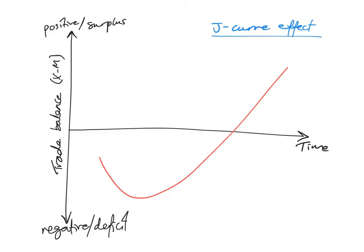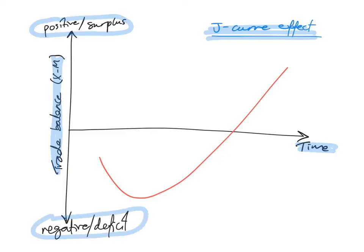Diagrammatically, the J-curve effect plots the trade balance — the difference between exports and imports — against time. On the vertical axis, a positive value indicates a surplus and a negative value indicates a deficit. As you can see, the current account deficit will actually get worse initially following a devaluation or depreciation, before it starts to improve. This is the J-curve effect.